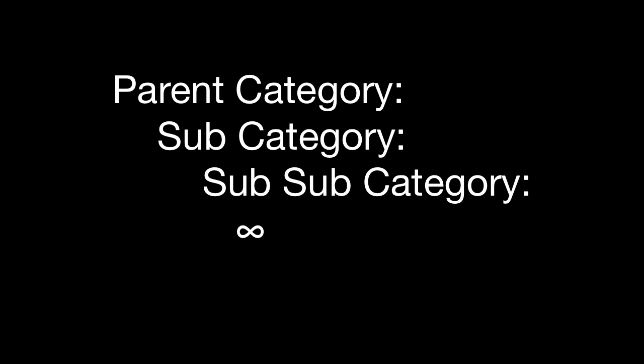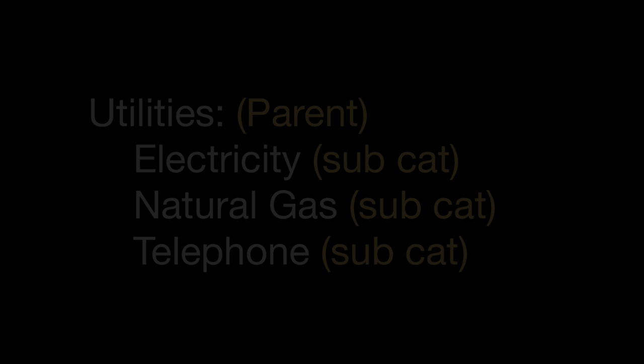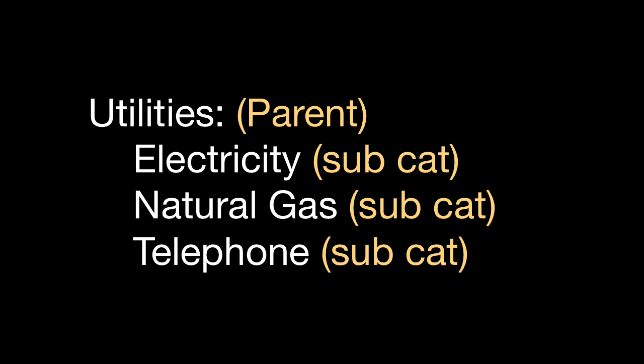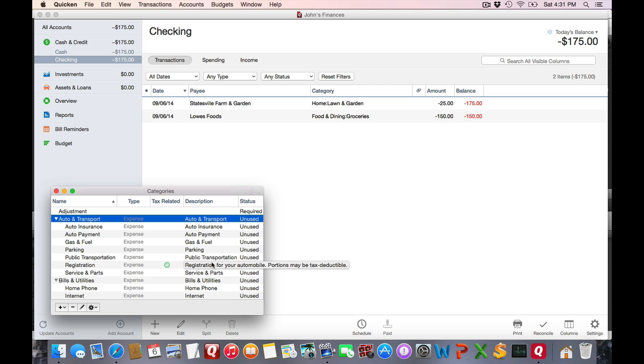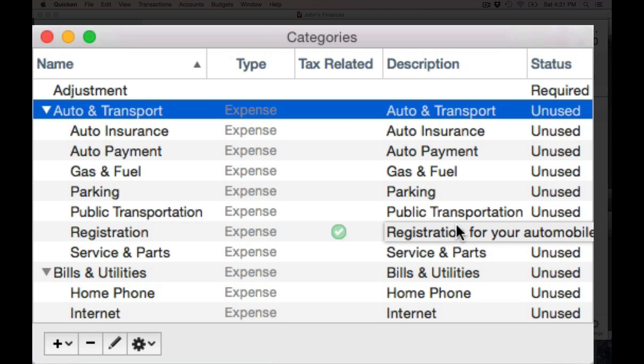Before I go further, I think it's important to understand the parent and possible subcategory relationship. This is more for reporting, but it's pretty simple. You might have a parent category such as Utilities, and then have subcategories such as Electricity, Natural Gas charges, or Telephone charges. Knowing that relationship, it should be pretty easy to understand the category window.